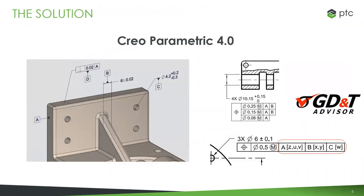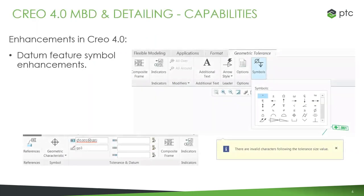PTC has been learning over time and updating the model-based definition capabilities with every release of Creo. This is a focus area because we see it as a good innovative way of doing things. Creo Parametric 4 had a total facelift for the model-based definition and GD&T. If you're familiar with the annotation capabilities before Creo 4, they've been redone — more functions, more control over details, more automation, more intelligence from Creo's end, and just easier to use with a better UI.